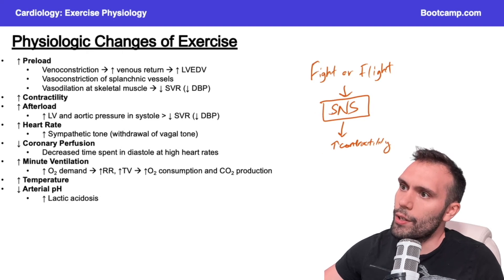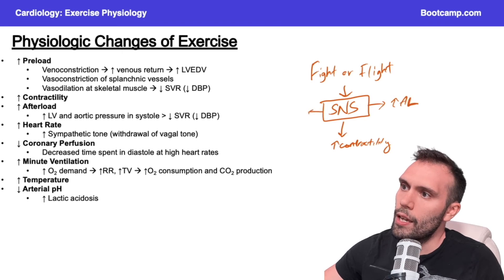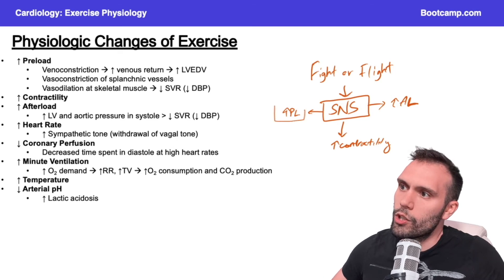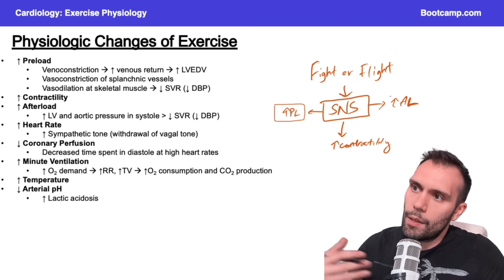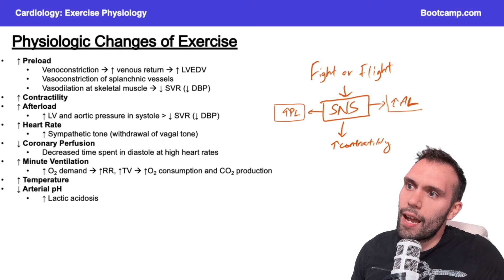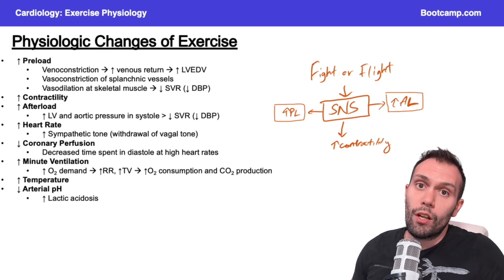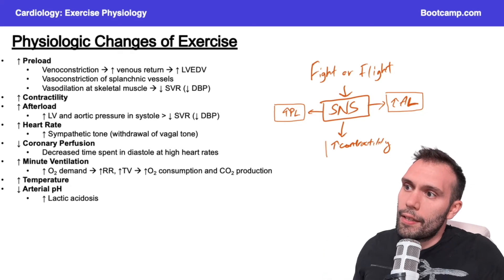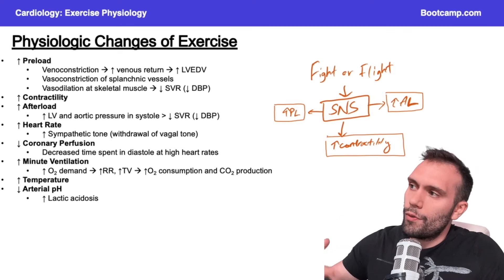We can also get increases in afterload and increases in preload. If I activate the sympathetic nervous system, I'm thinking about venoconstriction and shunting blood back up to the heart, and increases in afterload from constriction of the arterioles, because they're going to increase total peripheral resistance. Increases in contractility are also increasing stroke volume and cardiac output.